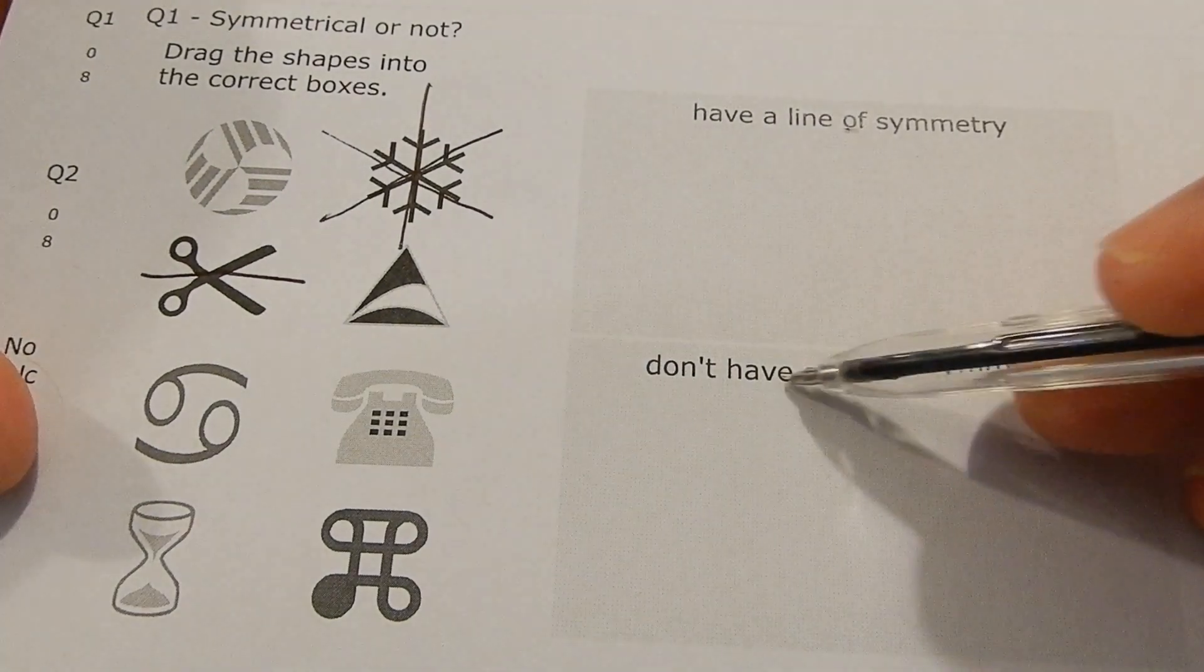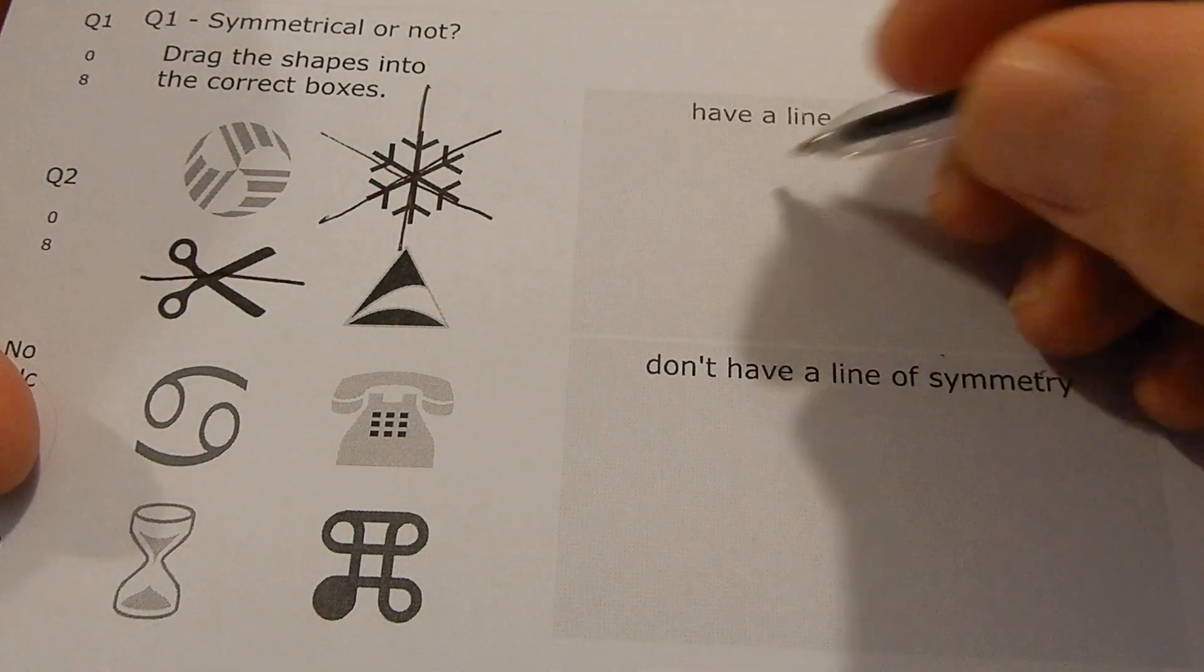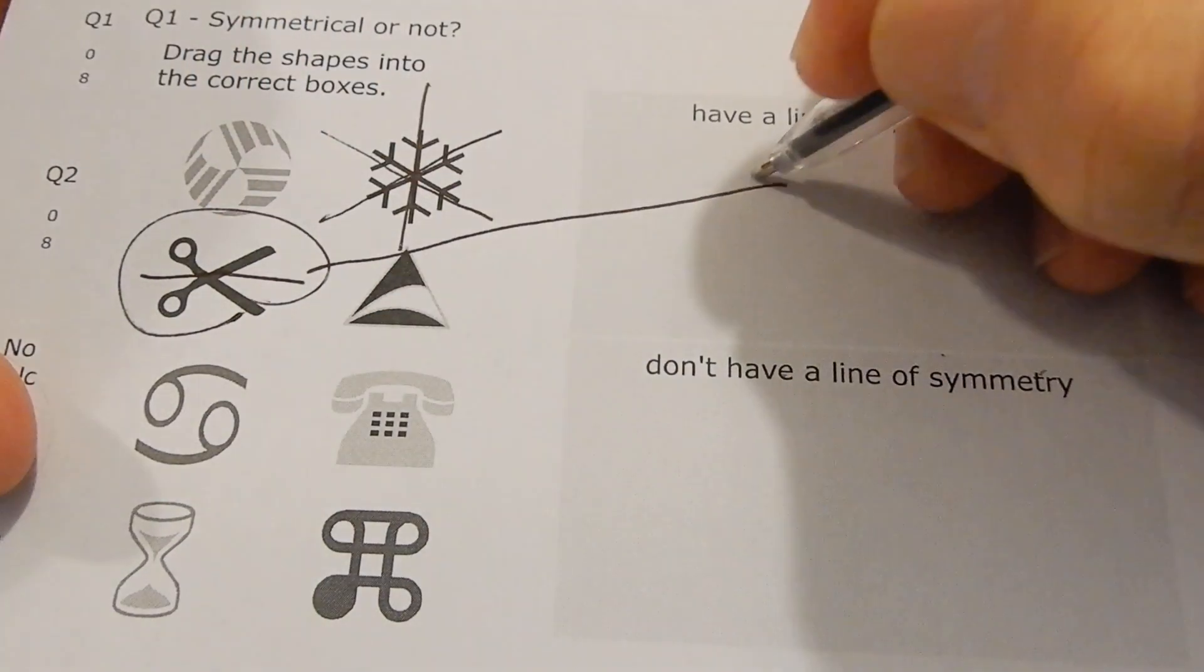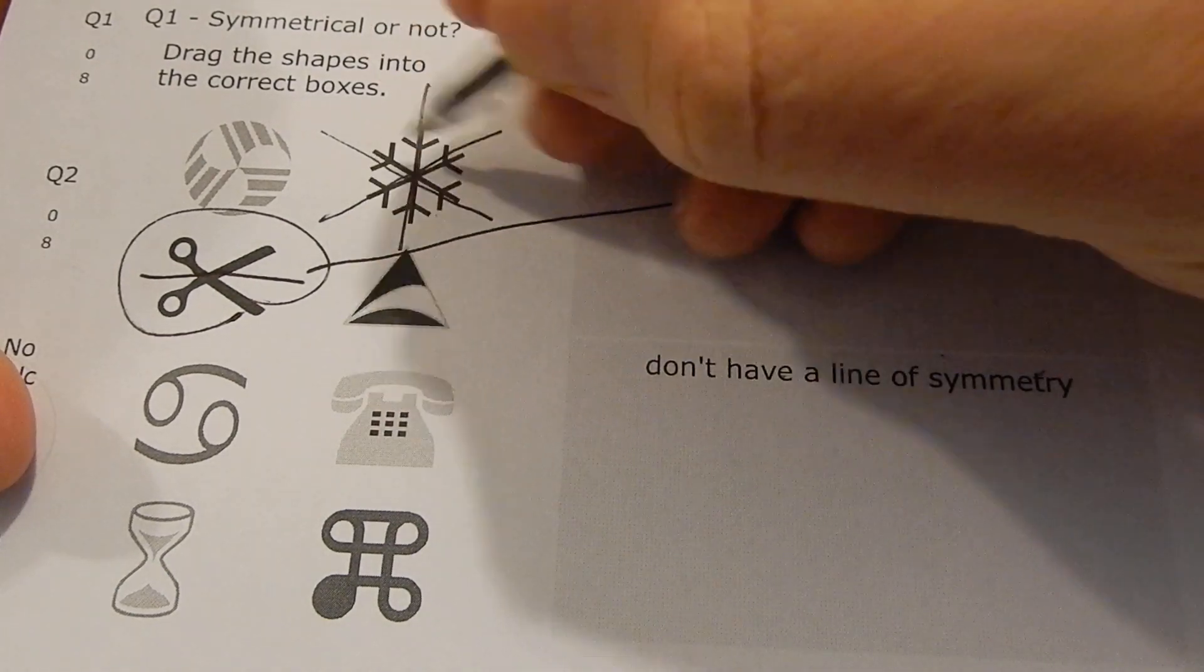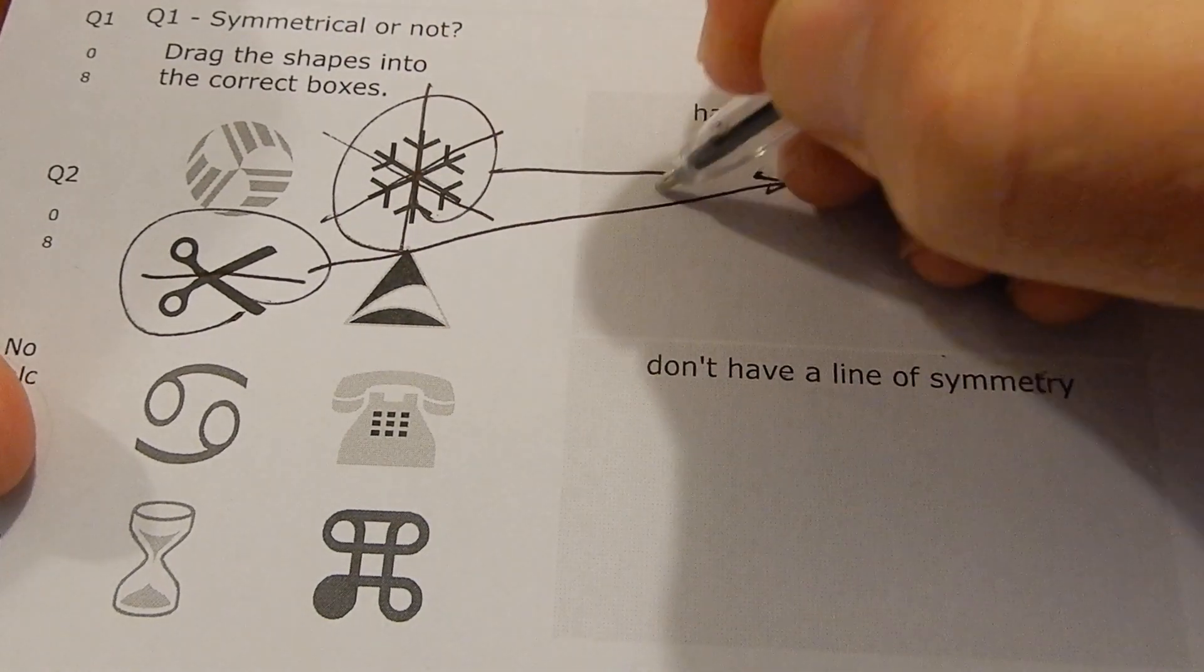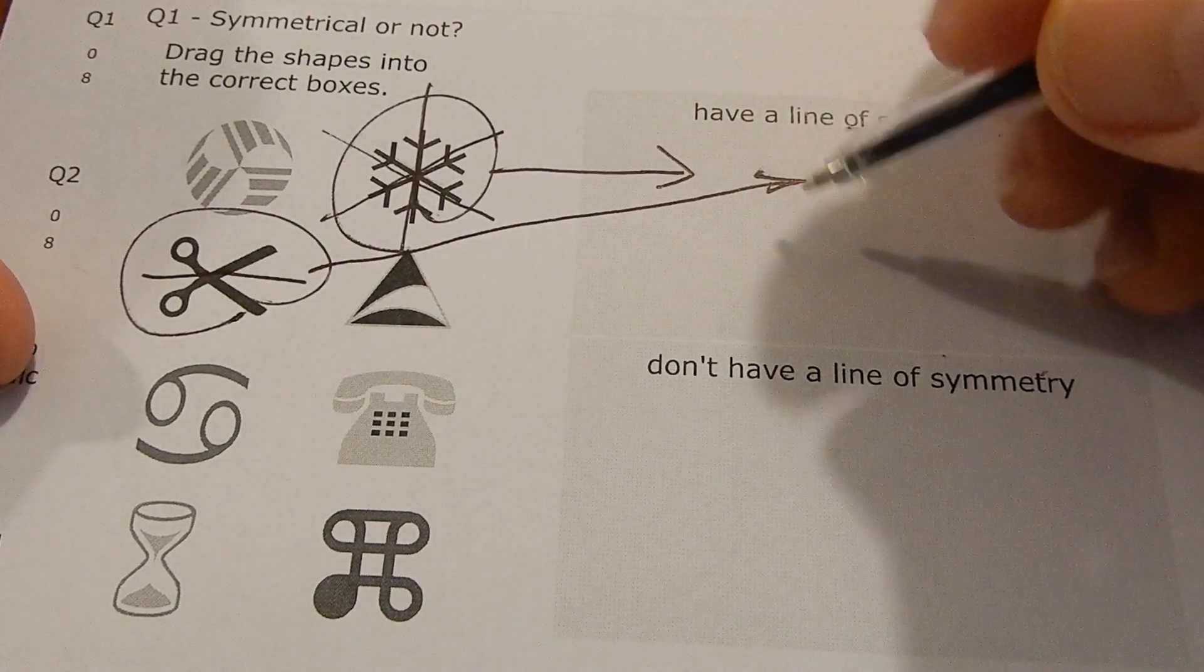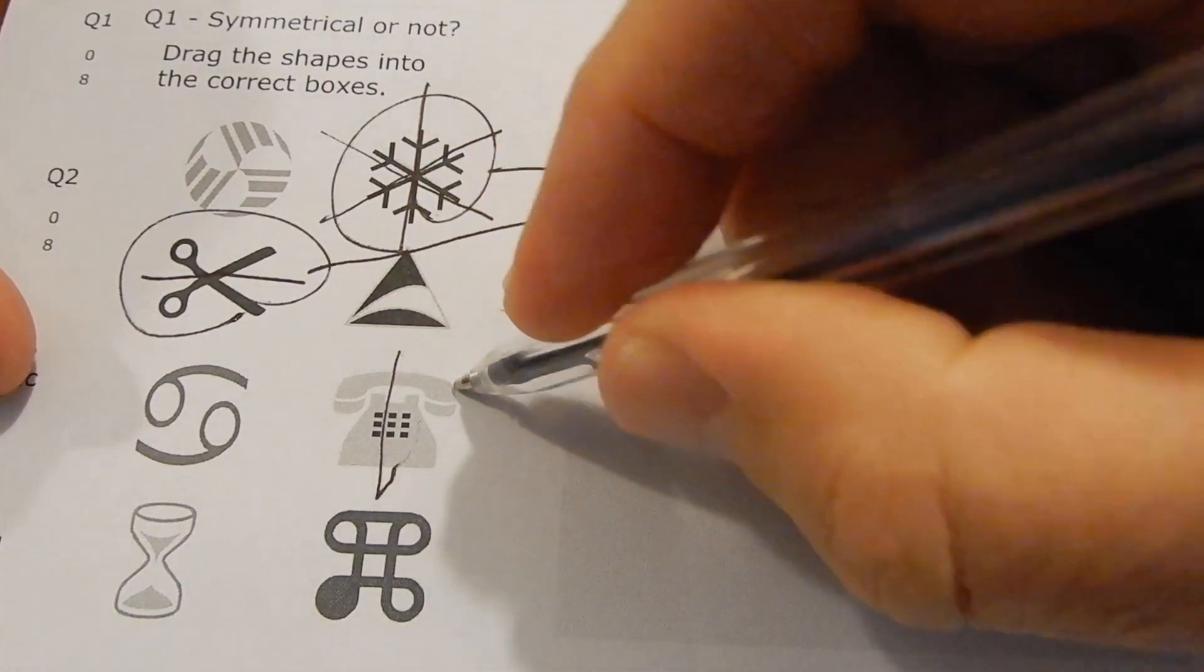Mirror lines of symmetry, don't have lines of symmetry. Okay, so the scissors definitely has lines of symmetry. That one, two, three lines of symmetry on the snowflake. Who's got a line of symmetry? Also, the telephone has...